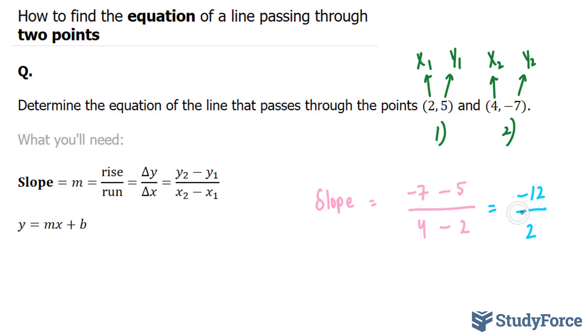Negative twelve divided by two is equal to negative six. So I just found my slope: m is equal to negative six.